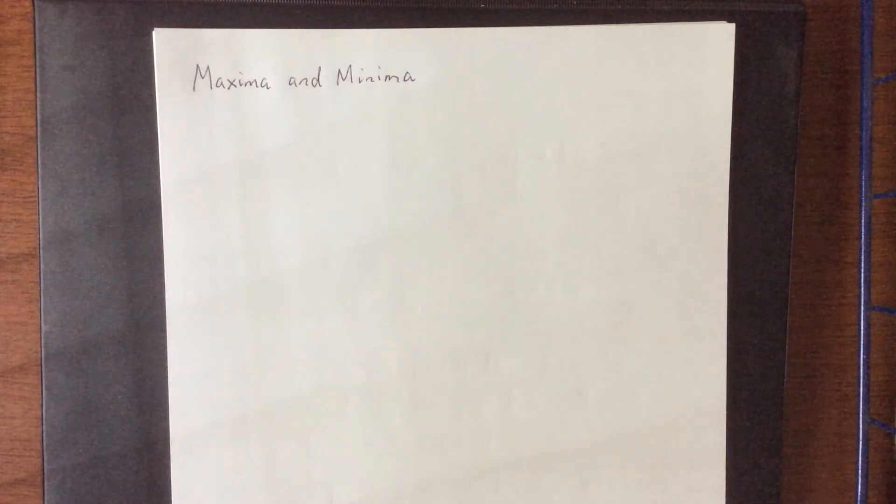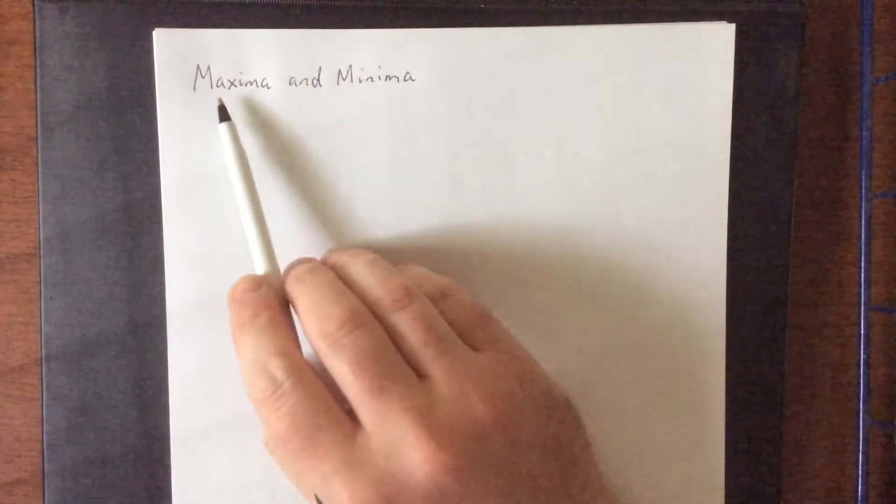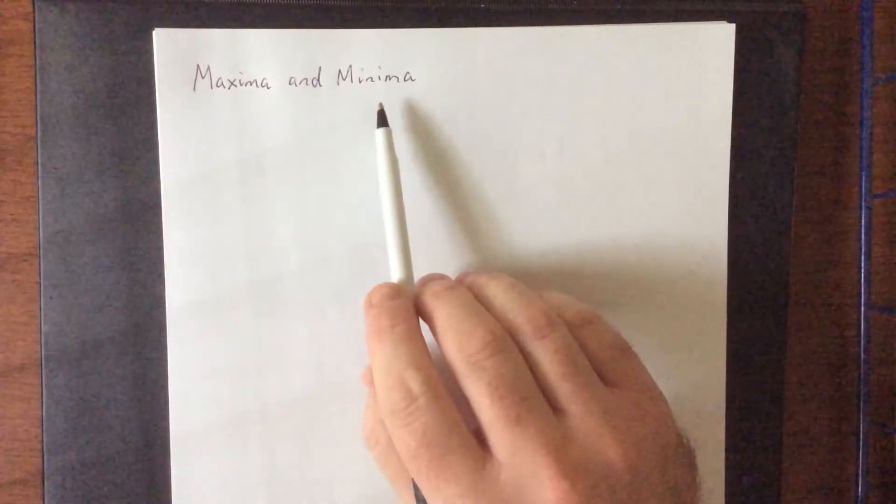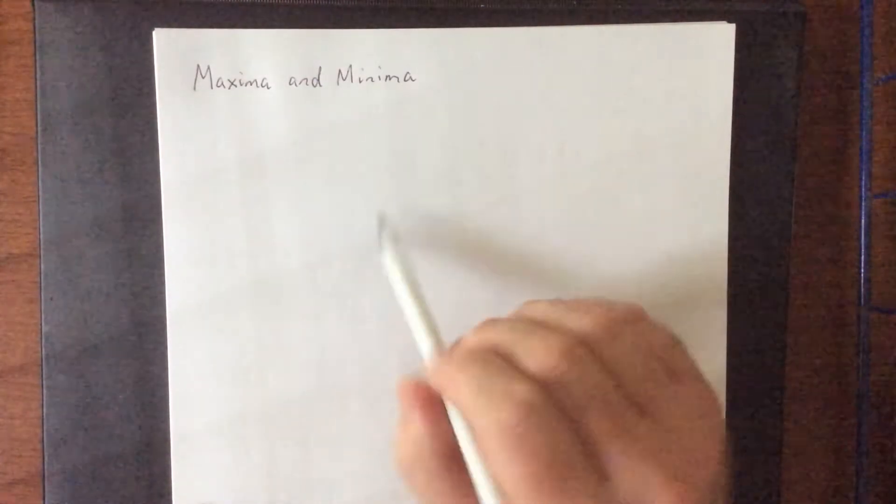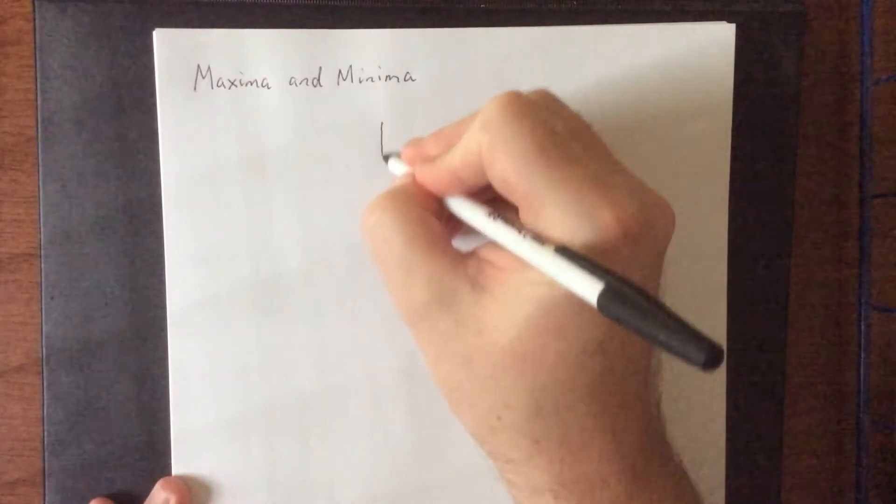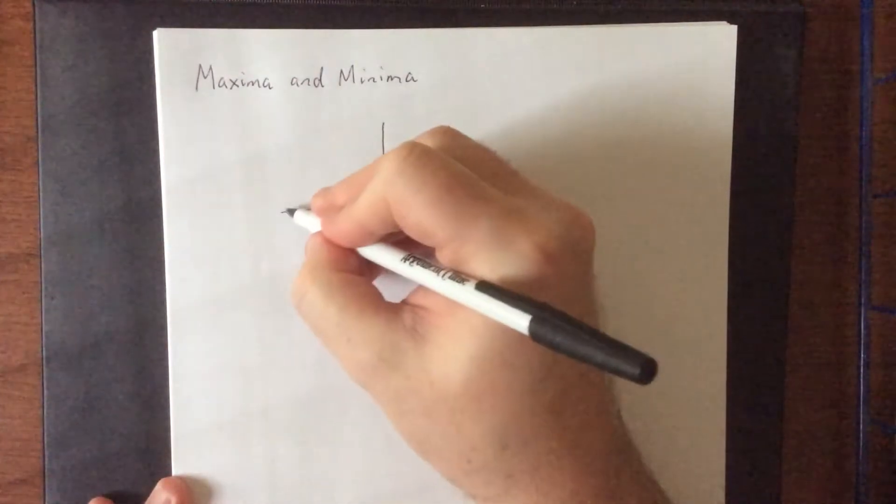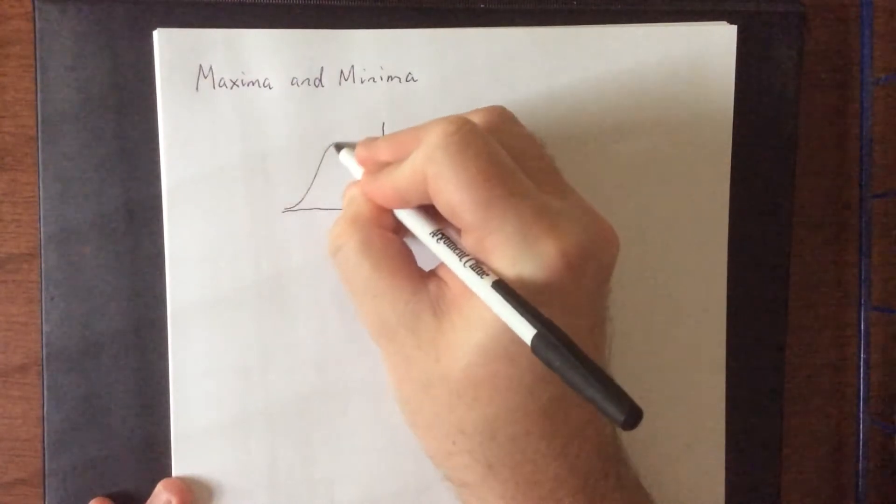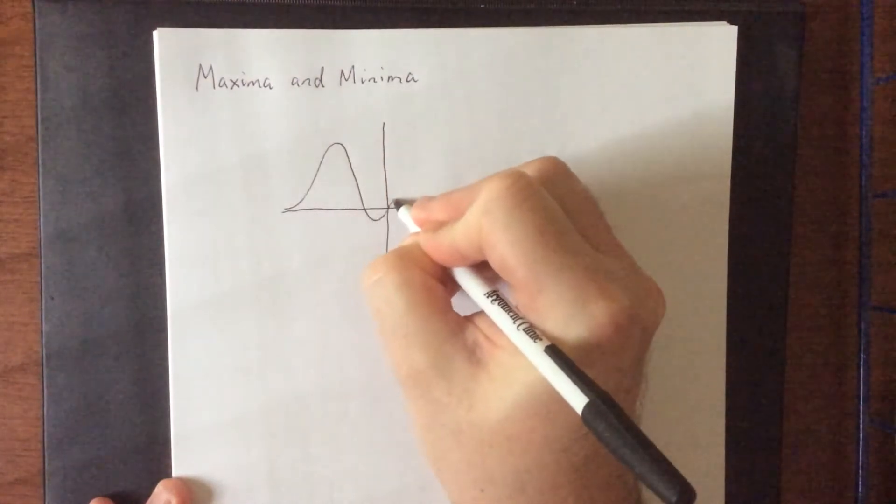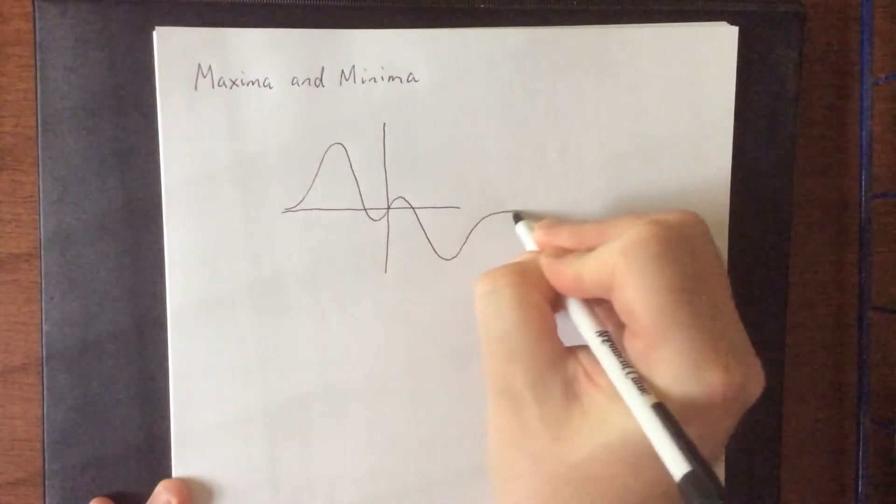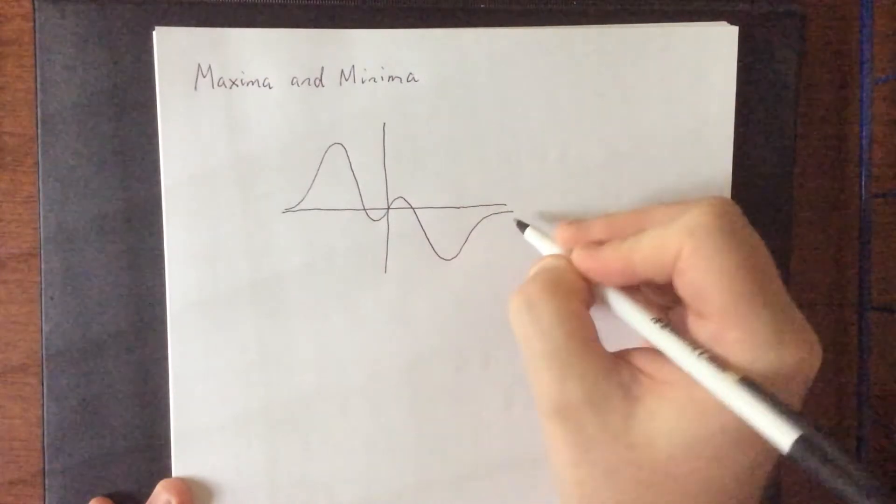In this section we are going to be giving a more formal definition to what it is when we talk about a maximum or a minimum. The plural of maximum would be maxima and the plural of minimum would be minima. So first thing I'd like to do is sketch a graph of a function and talk about the difference between different kinds of maxima and minima.